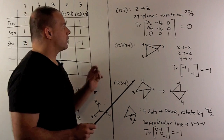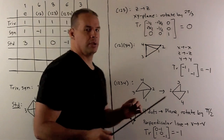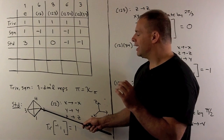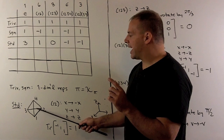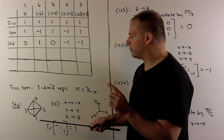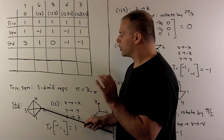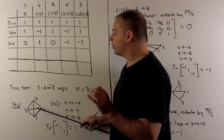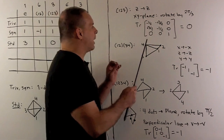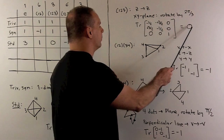For the three-cycle (1 2 3), the z-axis is fixed and we're doing a rotation by two-pi thirds. With respect to our standard basis, (1 2 3) acts by the corresponding rotation matrix, and taking the trace gives zero.